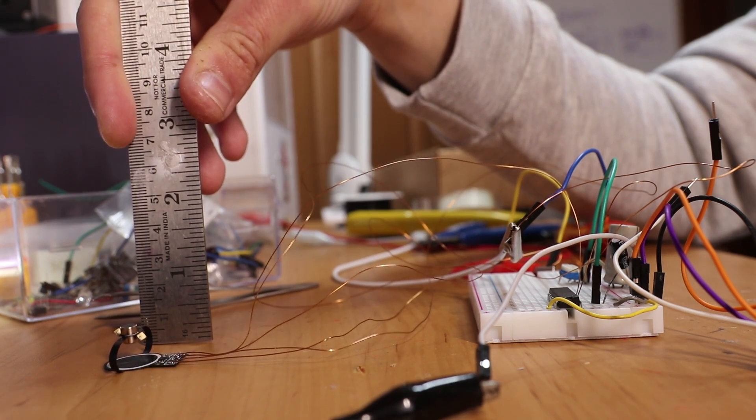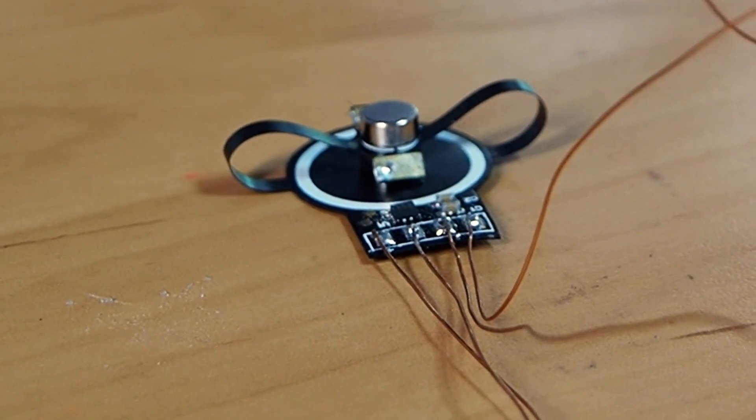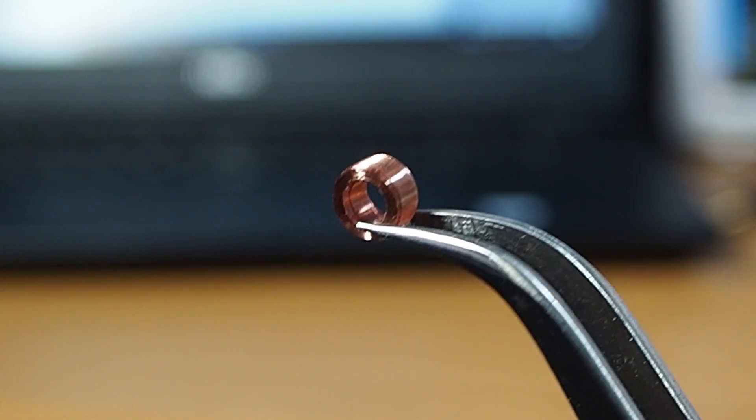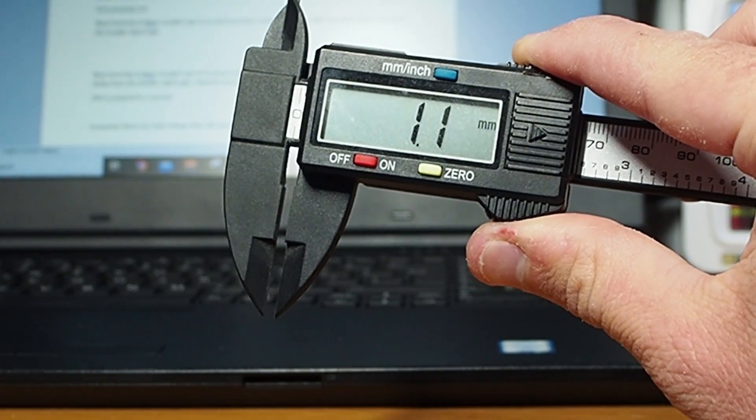Now to be honest I wasn't completely happy with these results because the wire was limiting its movement. So instead I found this tiny coil and decided to use its wire, which I think is less than 0.1 millimeter thick.